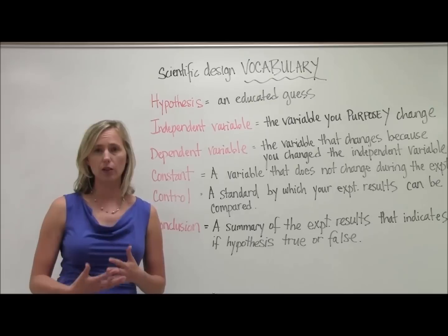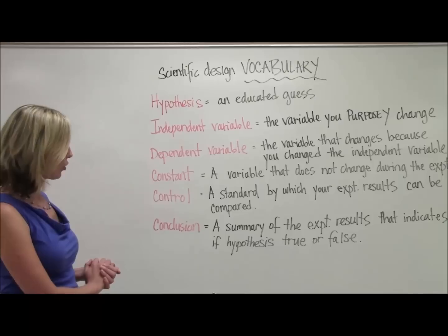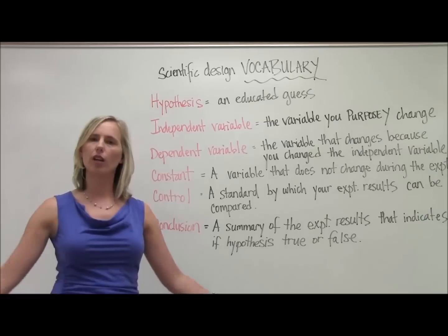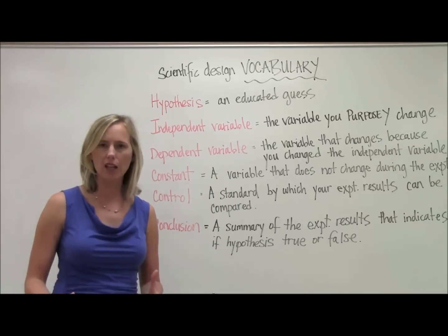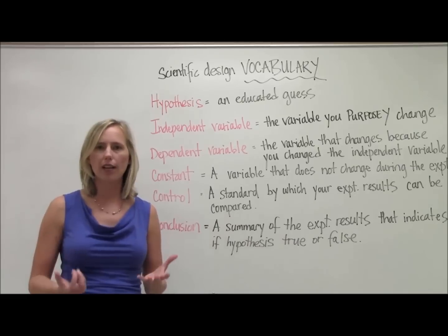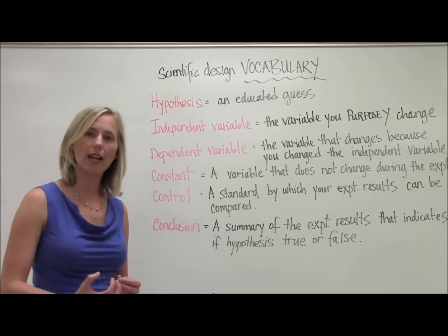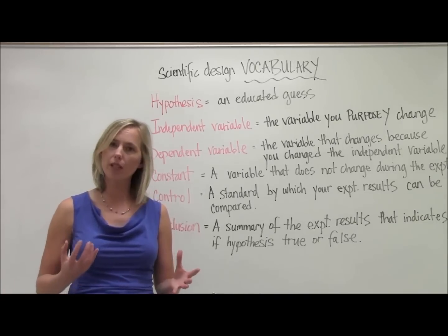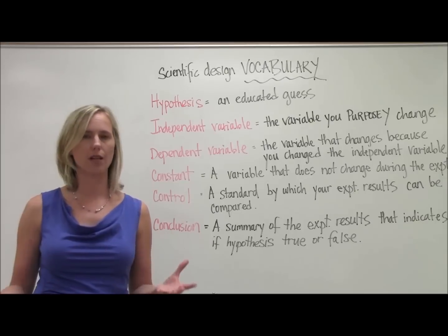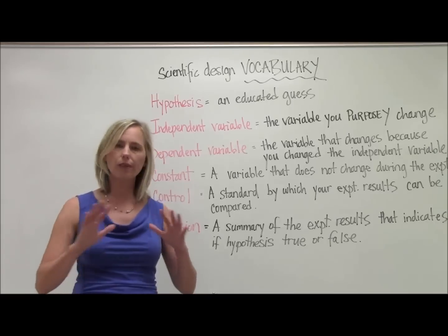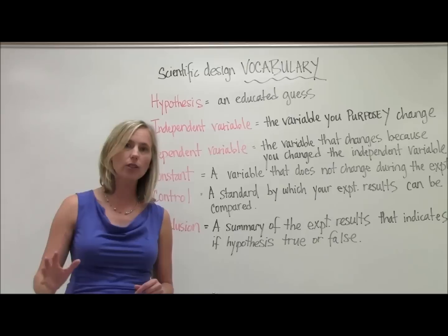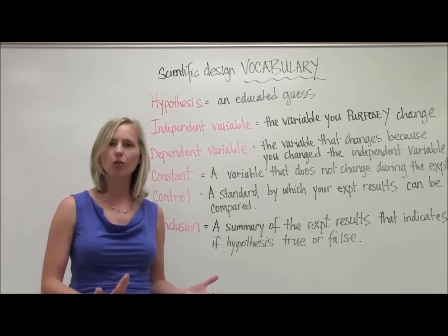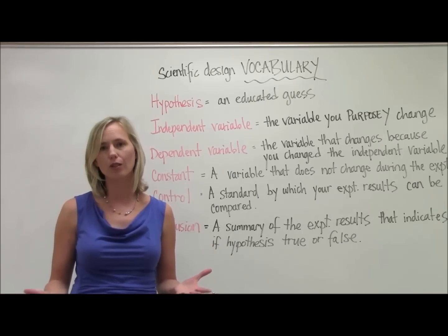Lastly, you're always going to be writing a conclusion. A conclusion is a summary of the experimental results that indicates if your hypothesis is true or false. This is where you take all of your data, analyze it, and try to say: yes, the tomato plants did increase in growth because we added more water — or we do not have significant proof, because some plants got bigger with more water but some got smaller, so it's inconclusive — or flat out we could say this is 100% false, and what we actually saw is the opposite: when we added more water, the plants actually grew less. Your conclusion takes all your data from your experimental results, analyzes it, and decides if your hypothesis was true or false.